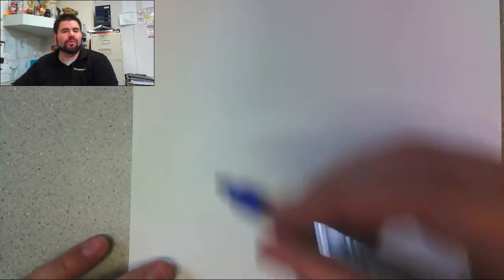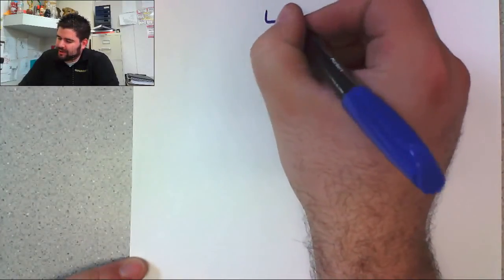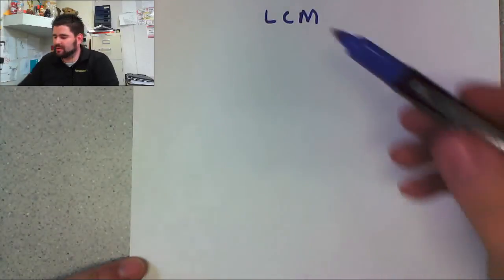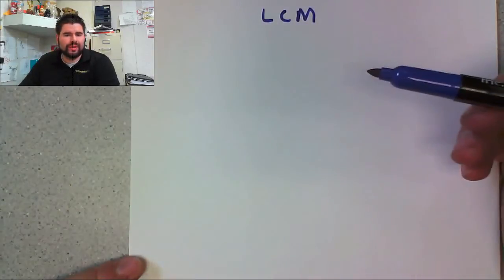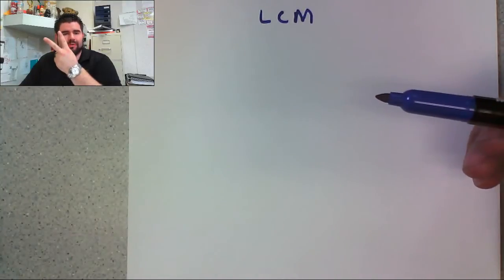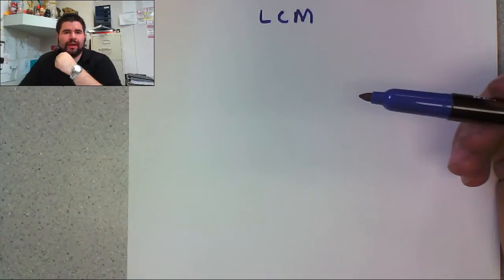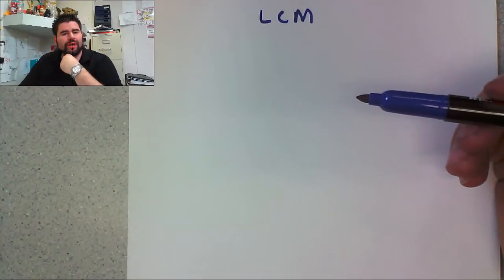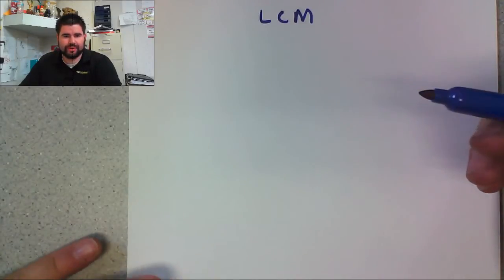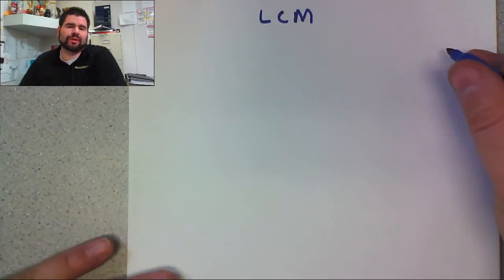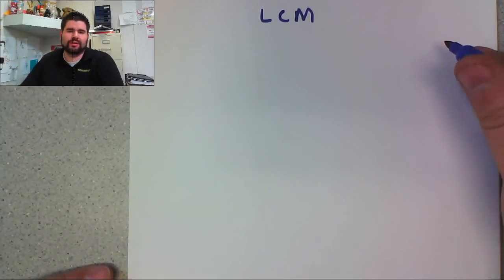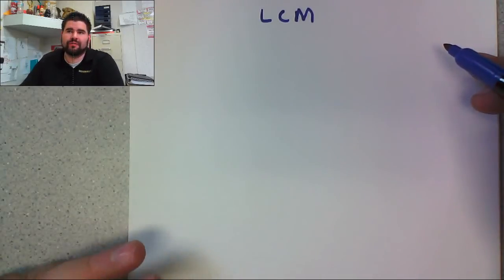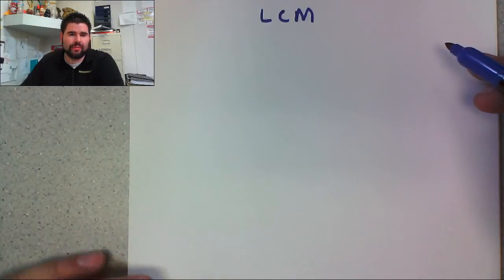Hello, everyone. Welcome back to Mr. Anderson's Algebra 1 Lessons. Today we're going to be talking about finding the LCM — the lowest common multiple. Basically, you have two or more numbers, and you're looking for the smallest multiple that they share. I wanted to do a couple of examples on how to find the lowest common multiple, and it really builds off of what we talked about last week with the greatest common factor, or GCF.